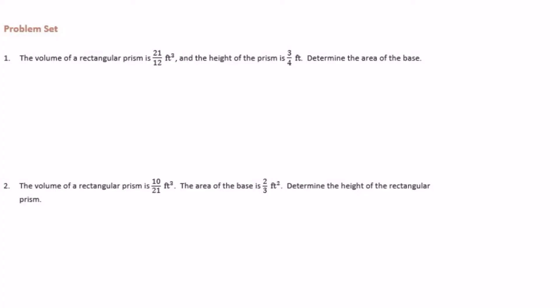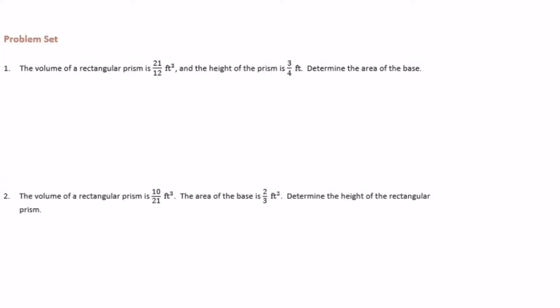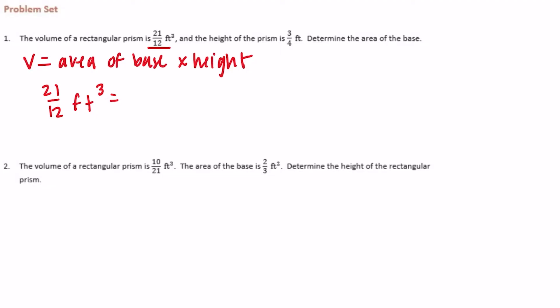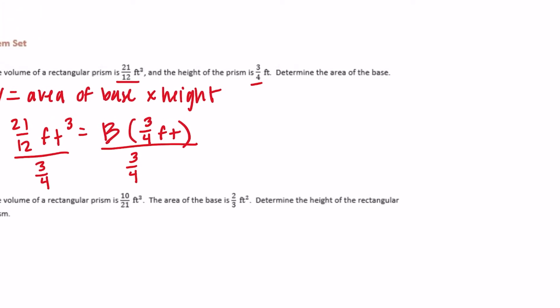Sixth grade module 5, lesson 14, problem set number 1. The volume of a rectangular prism is 21/12 feet cubed and the height of the prism is 3/4 feet. Determine the area of the base. Remember the volume is equal to area of the base times height, or length times width times height. Length times width is the area of the base. So the volume, 21/12 feet cubed, equals area of the base times the height of 3/4 feet. We're going to divide by 3/4 to get the area of the base alone.